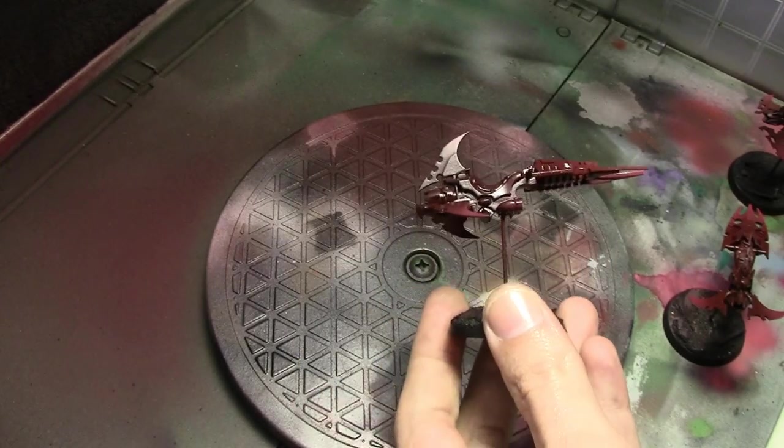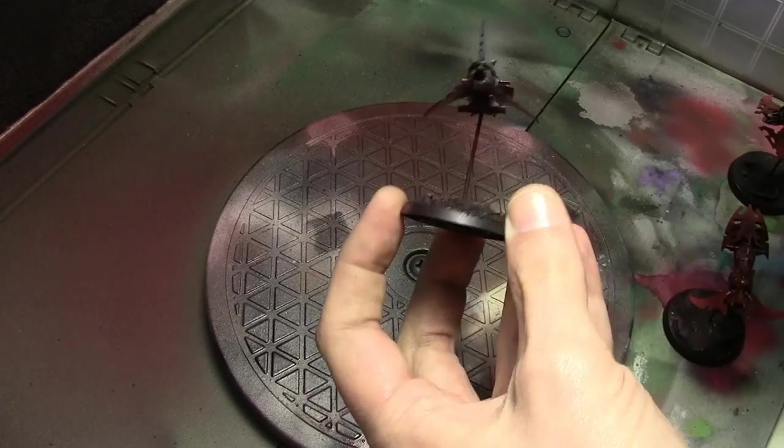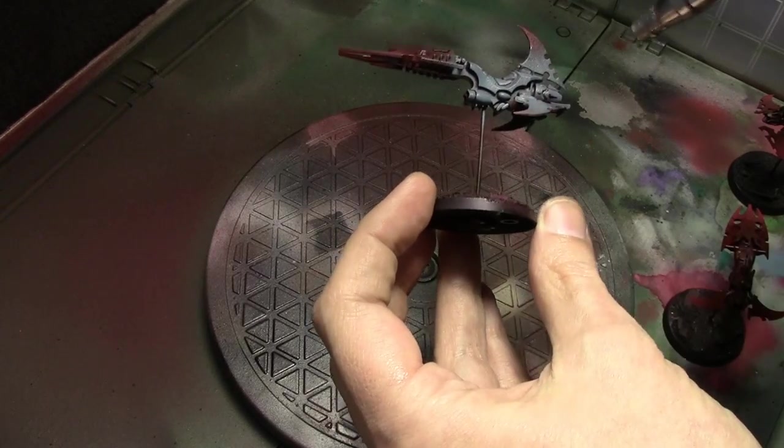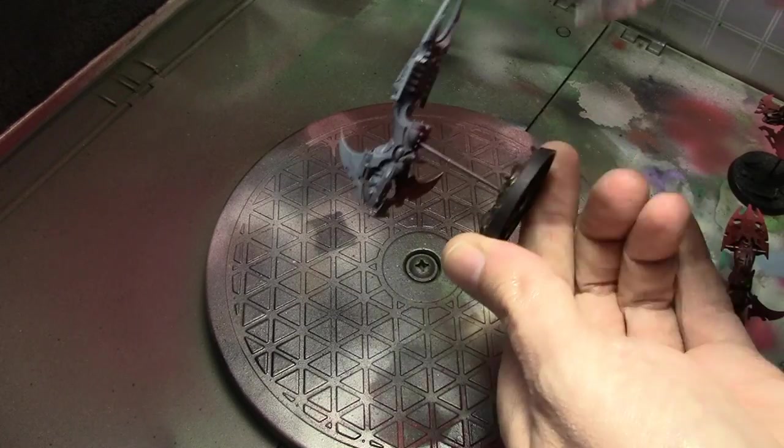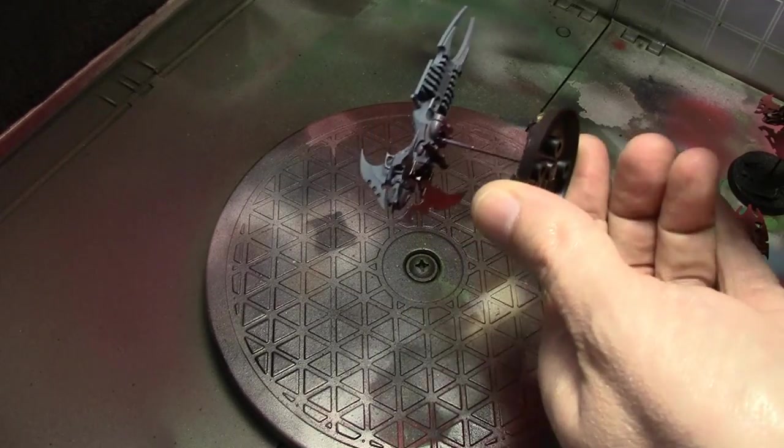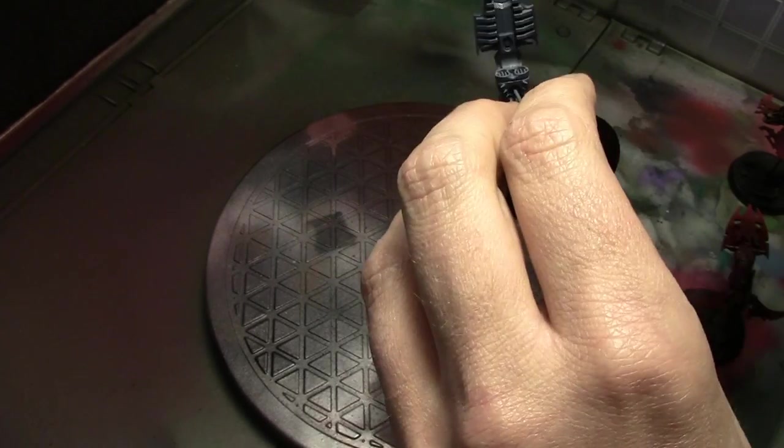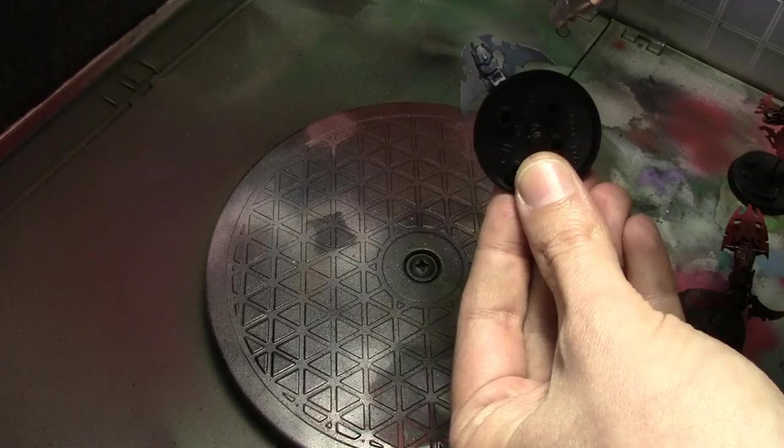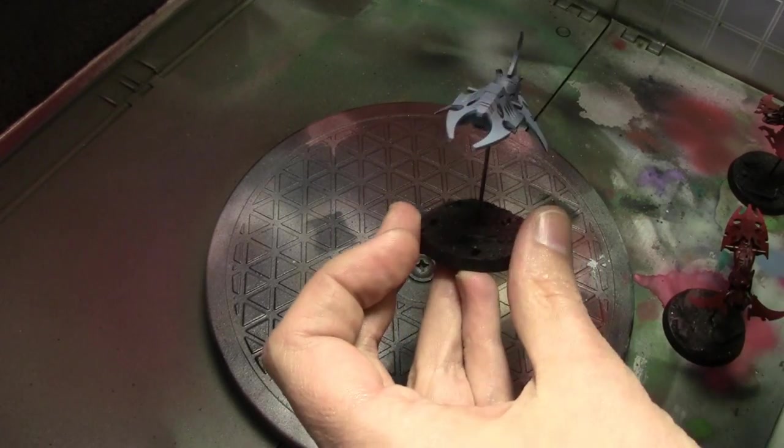I base coated the entire bike with Vallejo Model Air Intermediate Blue. And if anyone watched or remembers the Kabalite Warriors video that I did over a year ago, I am not following the exact same paint scheme. There are going to be alterations because it has been a year and I decided to tweak the scheme a little bit just in case you're comparing the two videos.